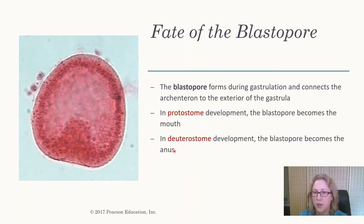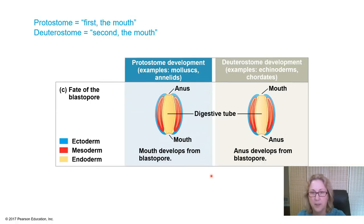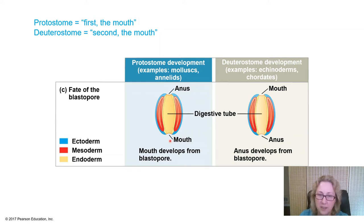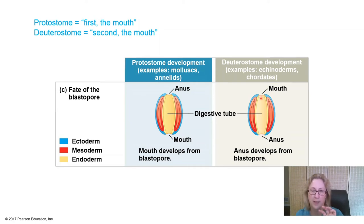Animals in the same phylum are generally the same type of early development. For protostomes, the blastopore develops into the mouth. For deuterostomes — which include echinoderms like starfish and sea urchins — the blastopore forms the anus, and the mouth is formed where the archenteron touches the edge of the blastula. So the mouth forms second.